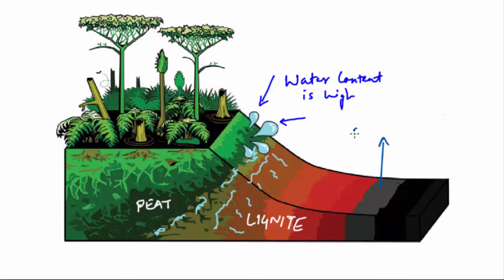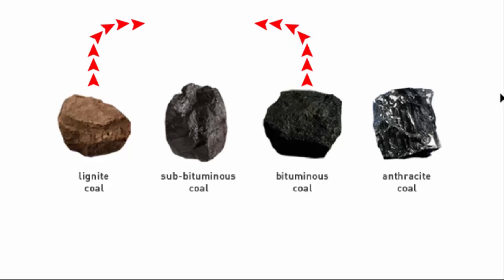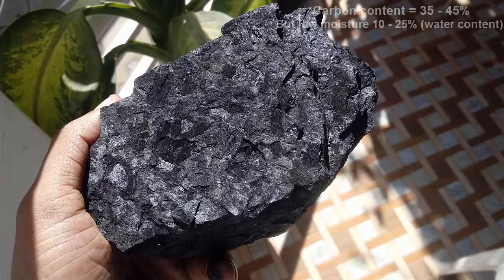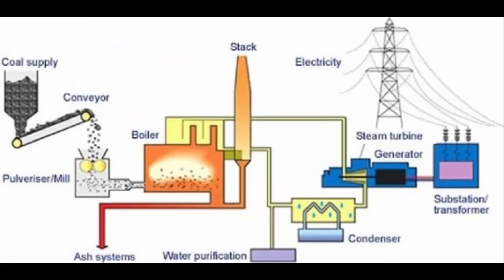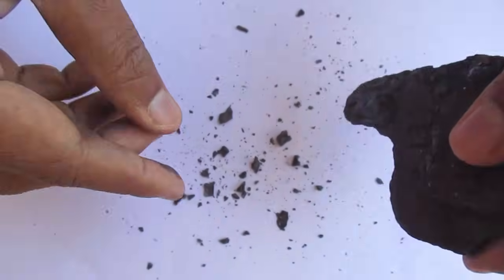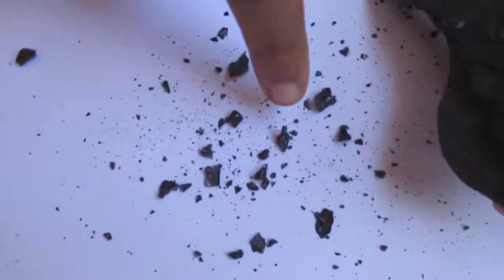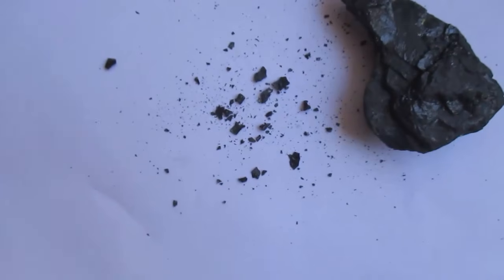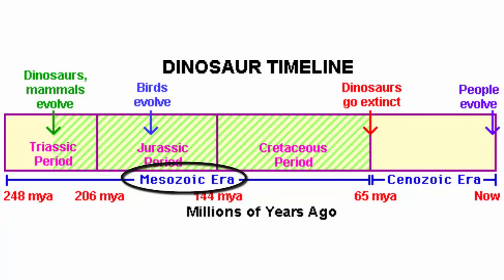The third stage consists of sub-bituminous coal. This is the upper layer of the main bituminous coal and is also called black lignite. Generally the color goes from dark brown to black. Its properties range from those of lignite to those of bituminous coal. This coal contains 35 to 45 percent carbon and is widely used for generating steam power and industrial purposes. Sub-bituminous coal is not stable when exposed to air — it tends to disintegrate because it has similar conditions to that of lignite and is believed to be formed at the same age.